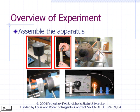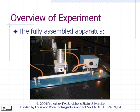Connect one binding post of the base unit — it doesn't matter which one — to the red binding post of the power supply. Connect the other to the black binding post of the power supply. With the circuit complete, verify that the lamp will turn on. Turn the power supply knob clockwise just enough to make the light bulb light up.